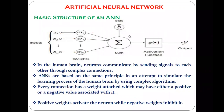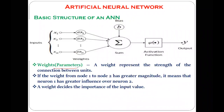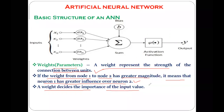In detail, weight as a parameter represents the strength of the connection between different units. If the weight from node one to node two has a greater magnitude, it means neuron one has a greater influence over neuron two. A weight decides the importance of the input value — if the weight of neuron one is greater than the weight of neuron two, then the activity of neuron one will get performed.